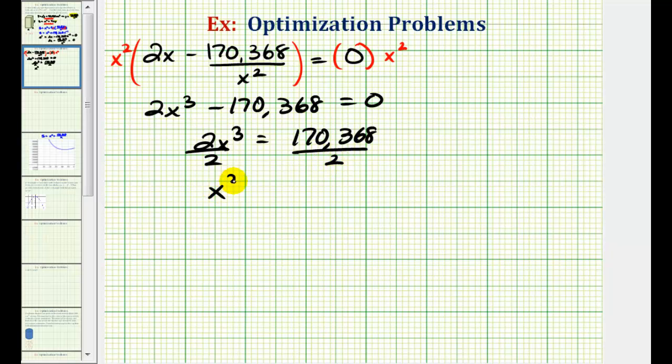Divide both sides by two. So we have x cubed equals 85,184. And now we'll cube root both sides in order to solve for x. This comes out nicely to x equals 44. So we only have one critical number.